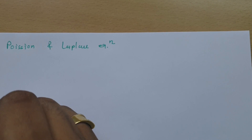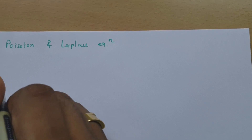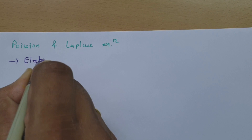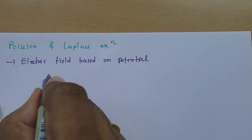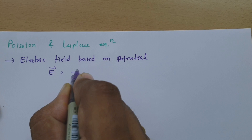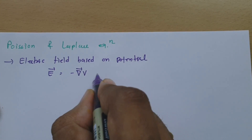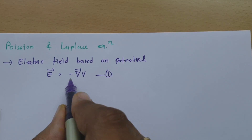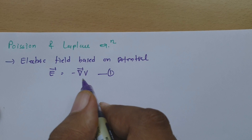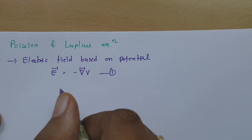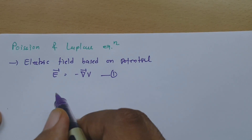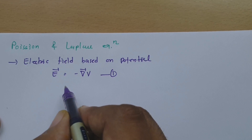As we have established the relation between electric field and potential, we know electric field is equal to the negative of the gradient of potential — E equals minus del V. This is equation 1. We also know Gauss law for electric field; the point form of Gauss law, which is also Maxwell's first differential form, has already been derived.